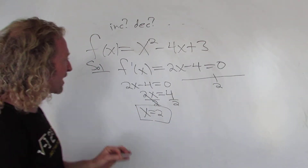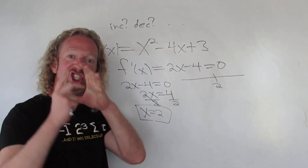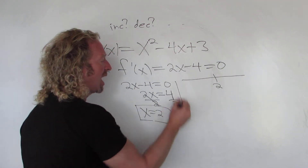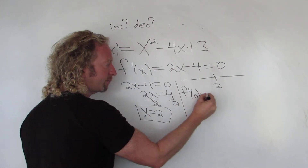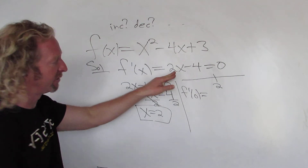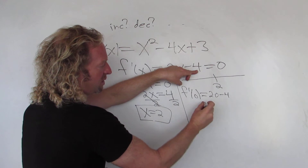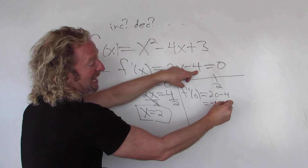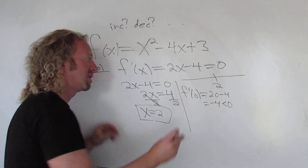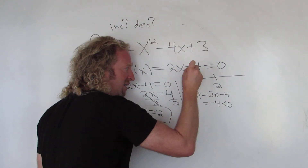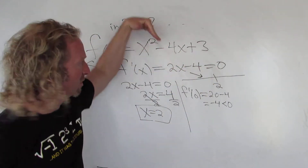Now pick test points. You can pick any number less than 2 — the easiest is 0. Plug it into the first derivative: f′(0) = 2(0) − 4 = −4. That's less than 0, so we have a negative first derivative. In this case the function is going to be decreasing here. Draw a little downward arrow.